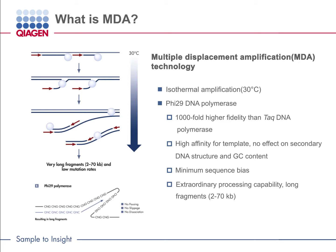Phi29 also overcomes the challenges presented by the secondary structure of DNA and GC content, resulting in highly uniform coverage of the genomic regions. Phi29 DNA polymerase also has extraordinary processing capability. Each highly processive Phi29 enzyme remains bound and continues replicating a single template for long stretches up to a thousand kilobases.